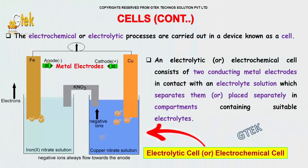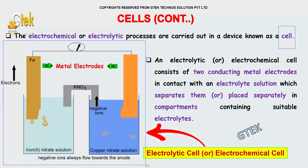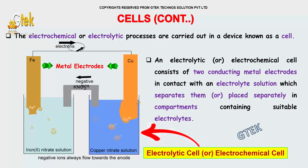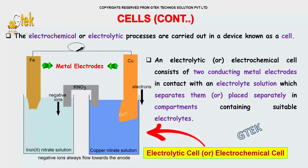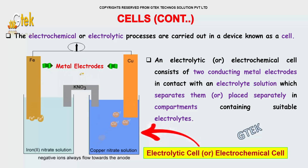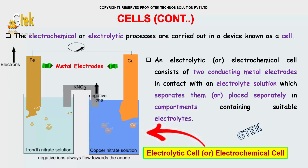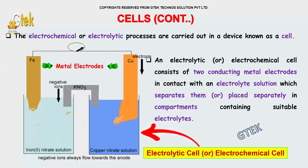The electrochemical or electrolytic processes are carried out in a device known as a cell. An electrolytic or electrochemical cell consists of two conducting metal electrodes in contact with an electrolytic solution that separates them, or placed separately in compartments containing suitable electrolytes. You can see here the electrodes and the electrolytic solution.